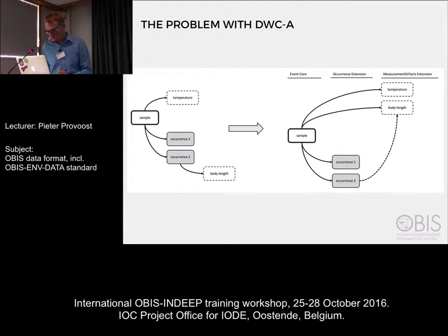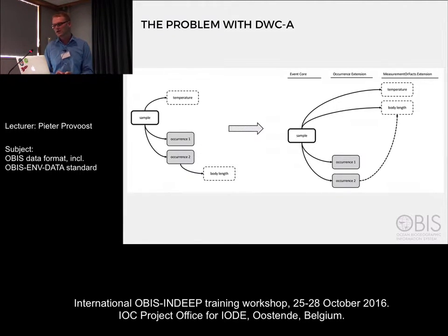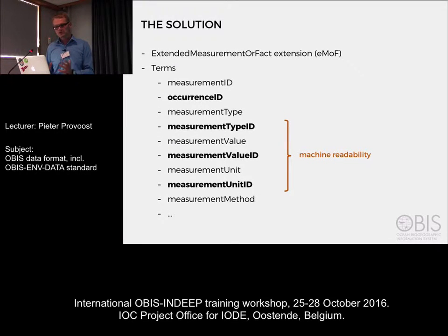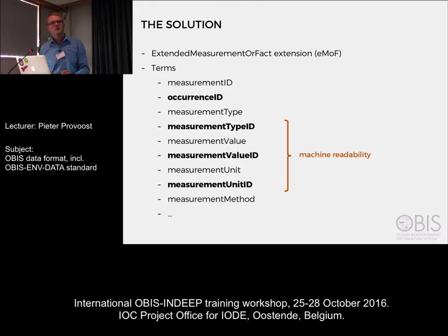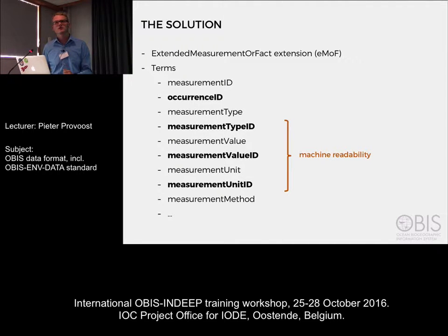The solution we came up with was to create a new version of the measurement extension, adding an occurrence ID field. In this case, you will still link your measurements to your events in the core file, but you can also link to the occurrence IDs in your occurrence extension. This new extension is basically the existing measurement or facts extension with some added fields: first, the occurrence ID to link to your occurrence records, and then some extra fields to make the datasets more machine readable. Before you just had measurement type, measurement value, and measurement unit, but with these new terms you can add identifiers for all these values.